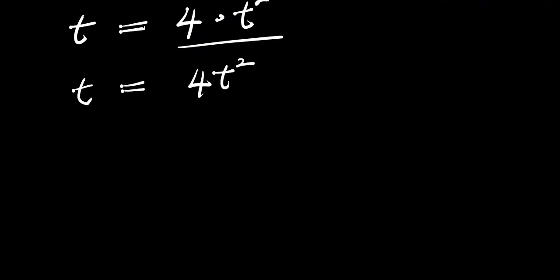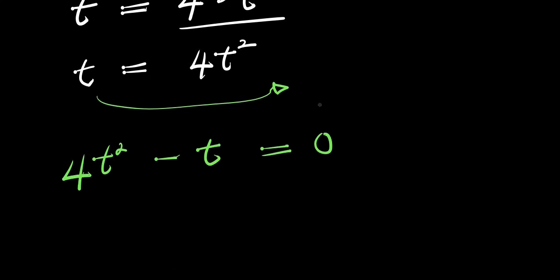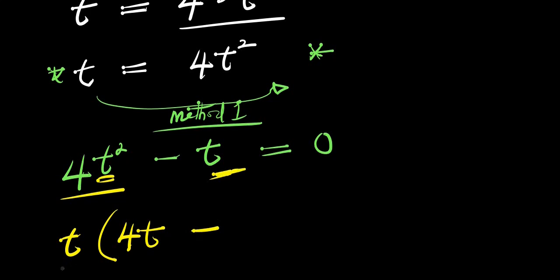The next step will be to take this t over to the other side. It becomes negative t. I have 4t squared minus t equals 0. There are two methods of solving this — let this be method one. I'm going to factor out t. I have t times: 4t squared divided by t gives 4t, minus t divided by t gives 1, equals 0.